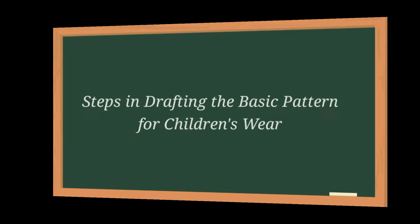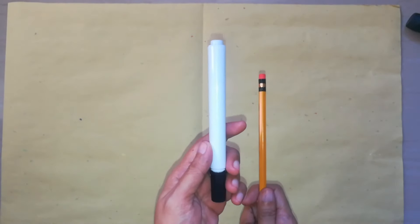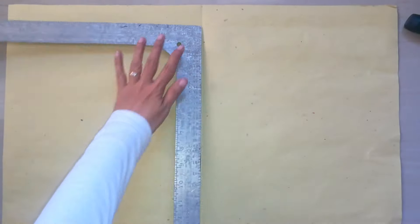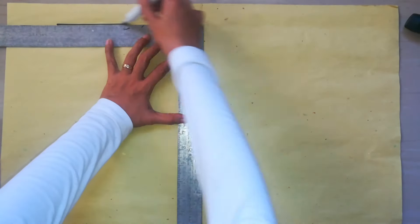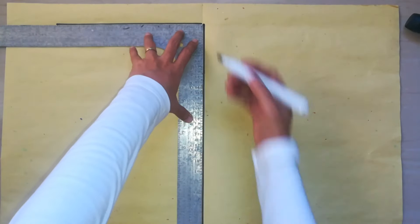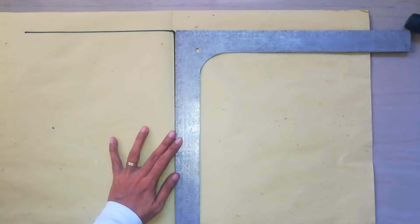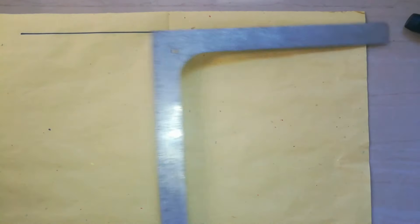And now, here are the steps in drafting the basic pattern for children's wear. In drafting pattern, it is better to use pencil, but in this demonstration, I'll be using a marker in place of pencil for you to see it clearly. In one-fourth pattern paper, folded in the center, draw a construction line with the use of L-square. Turn the L-square to another side. And now, your construction line is like a big letter T.